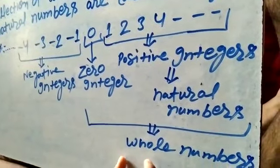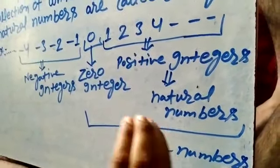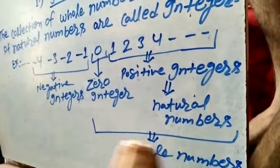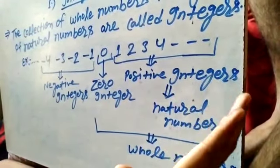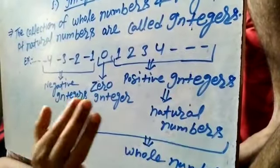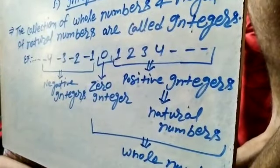And the collection of natural numbers and zero are called whole numbers. This is also called integers. In this case, we will be able to classify integers like positive integers, zero integers, and negative integers. Thank you.